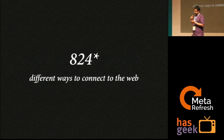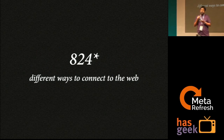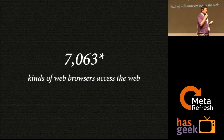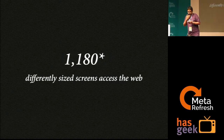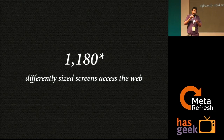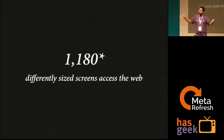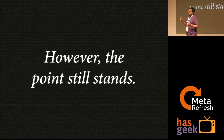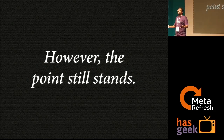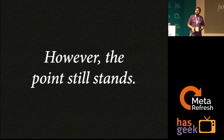As a result of all these principles, we have about 824 different ways to connect to the web right now, about 7,000 kinds of web browsers, about 432,000 types of devices, and more than a thousand different screen sizes. Please don't quote me on these because I cooked them up right before this. But the point still stands — there are just too many devices and various kinds of things interfacing the web at this point of time.